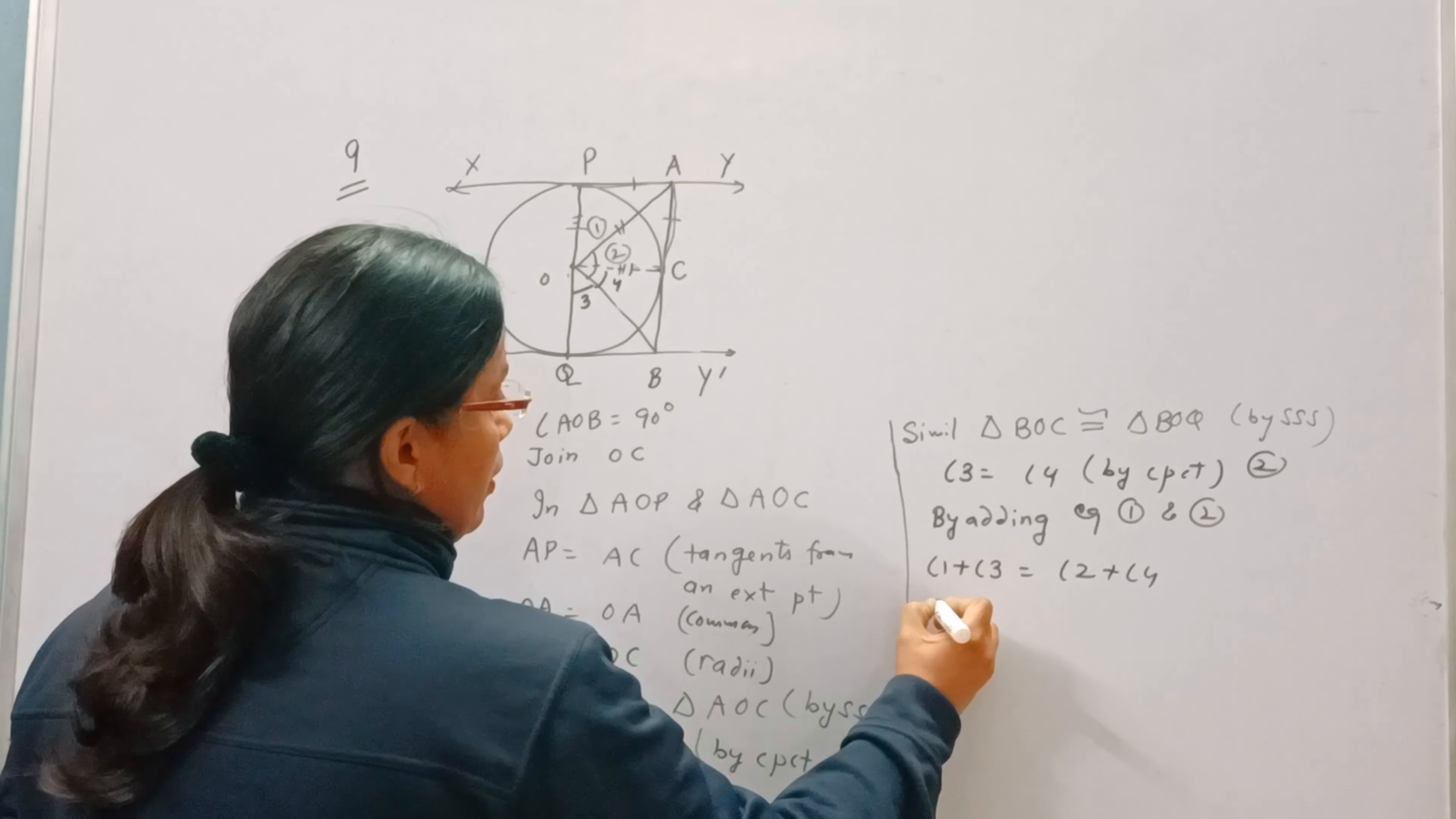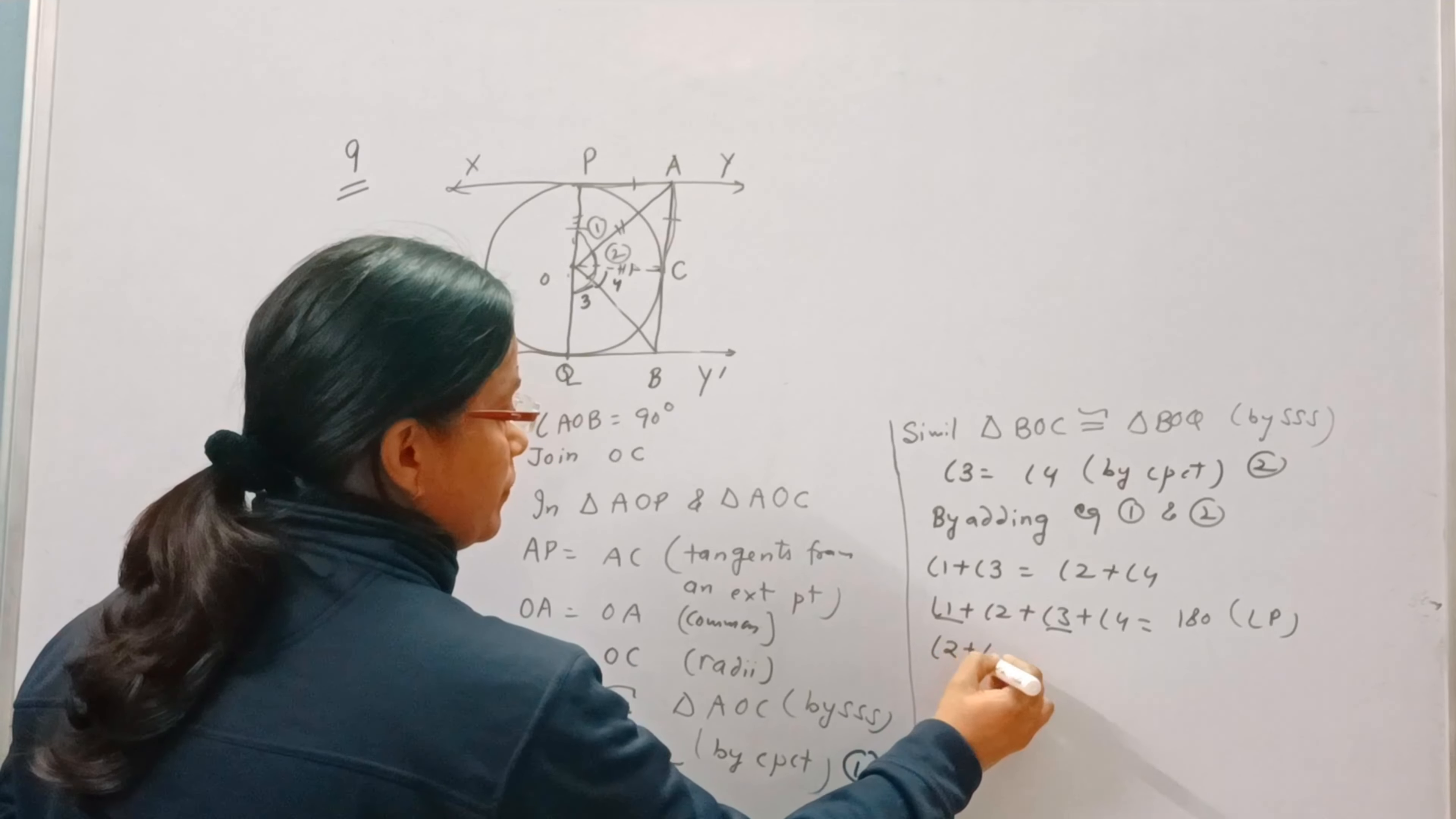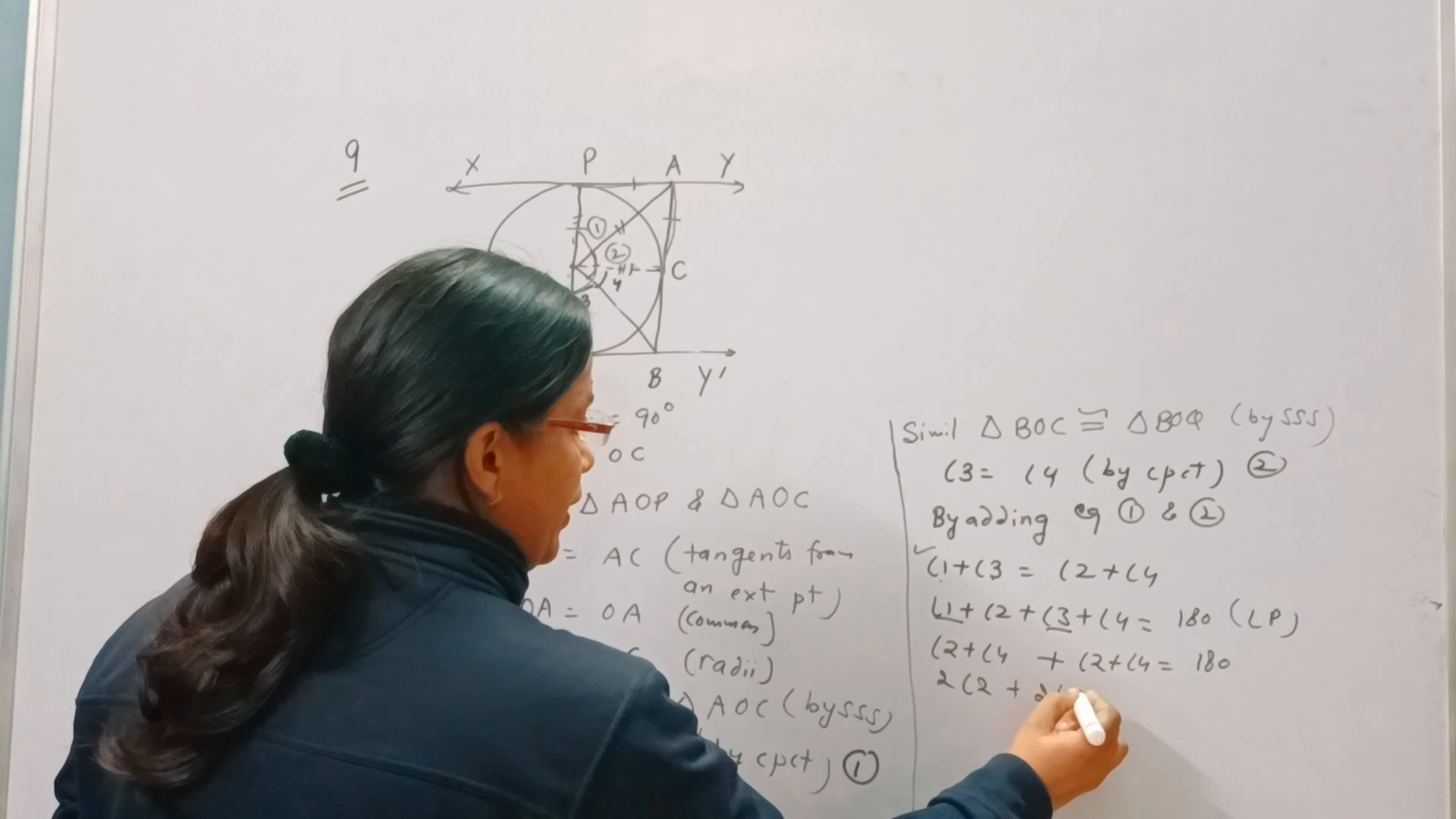Now angle 1 plus 2 plus 3 plus 4 will be equal to 180, linear pair. Now we can replace 1 plus 3 by 2 plus 4. So it will become double of angle 2 and double of angle 4 will be equal to 180.